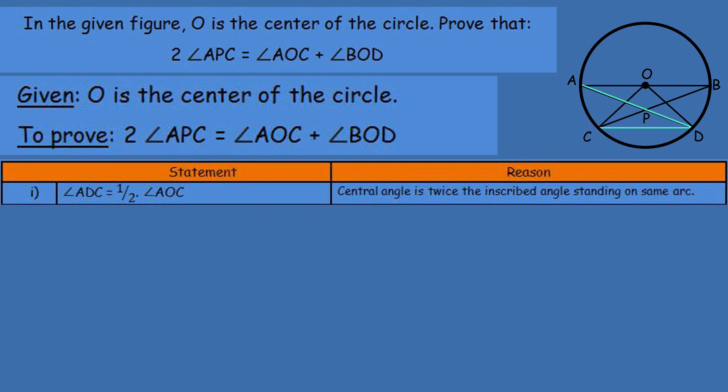Because both of these angles, angle ADC and angle PDC represent the same angle, right? So, first statement, angle ADC we replace, so we can write angle PDC is equal to half times of angle AOC. Reason, I mean, angle ADC is equal to angle PDC.